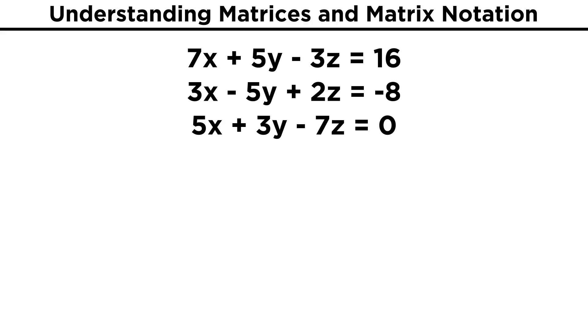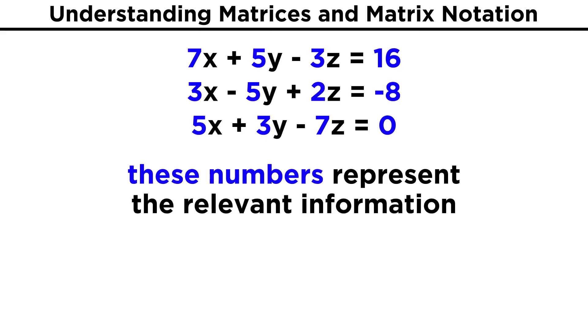Say we have the following system of equations with three variables. They all have the same variables, they just have different coefficients, and each expression equals a different number. Since the variables are all the same, it is the coefficients that are relevant, so why don't we abbreviate these coefficients some other way?